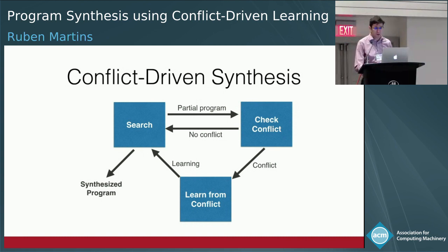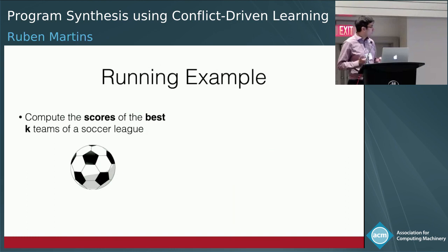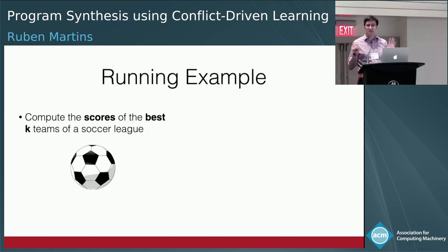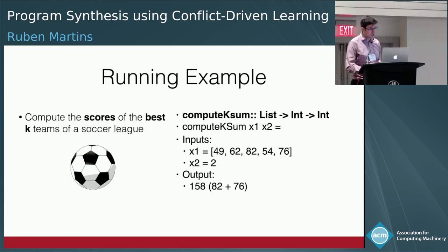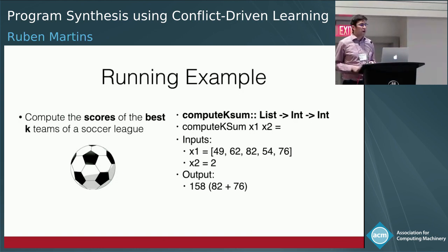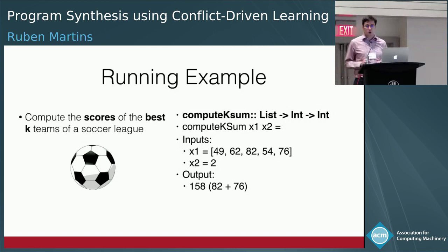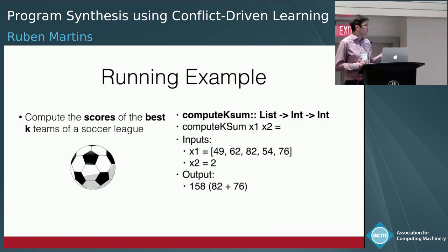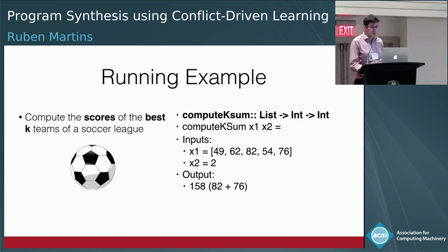I'll use a running example since it's World Cup — compute the scores of the best K teams in a soccer league. I want a function compute-K-sum that takes a list and an integer K and returns an integer. Given a list x1 of team scores, I want to compute the score of the best two teams. So if the best scores are 82 and 76, the output should be 158.